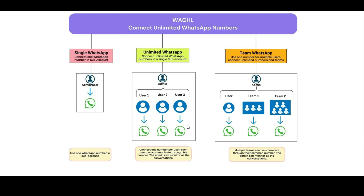If you have multiple users who would like to communicate using their own WhatsApp numbers, they can do that easily. Users can't see each other's messages — they will only be able to see their own messages. And as an admin, you can see all the messages and conversations of the users. This is how it will work.